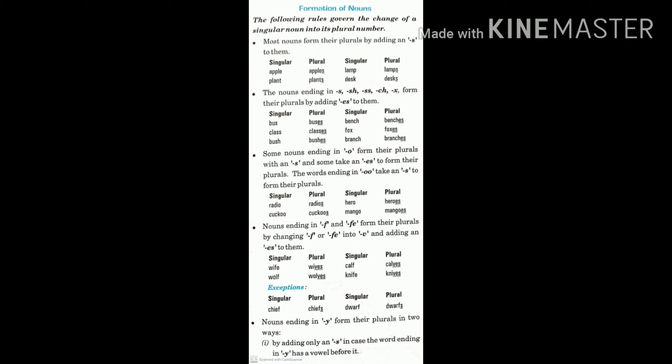Some nouns ending in o form their plurals with an s and some takes an es to form their plural. For example, radio, radios, hero, heroes.